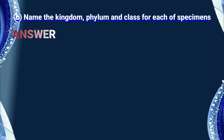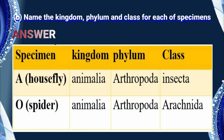Question number two answers: name the kingdom, phylum, and class for each of the specimens. Specimen A belongs to kingdom Animalia, phylum Arthropoda, and class Insecta. Specimen O belongs to kingdom Animalia, phylum Arthropoda, and class Arachnida.